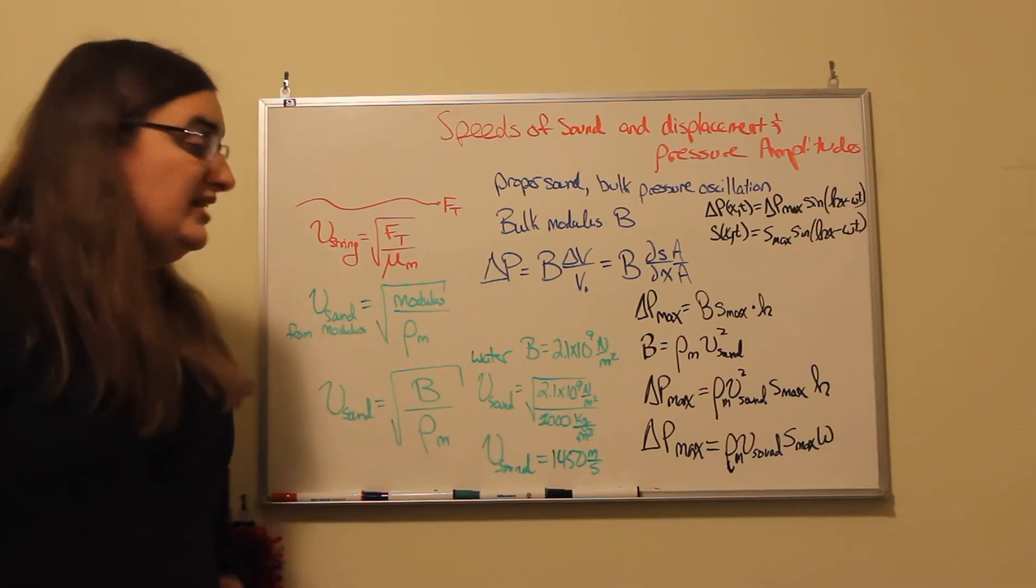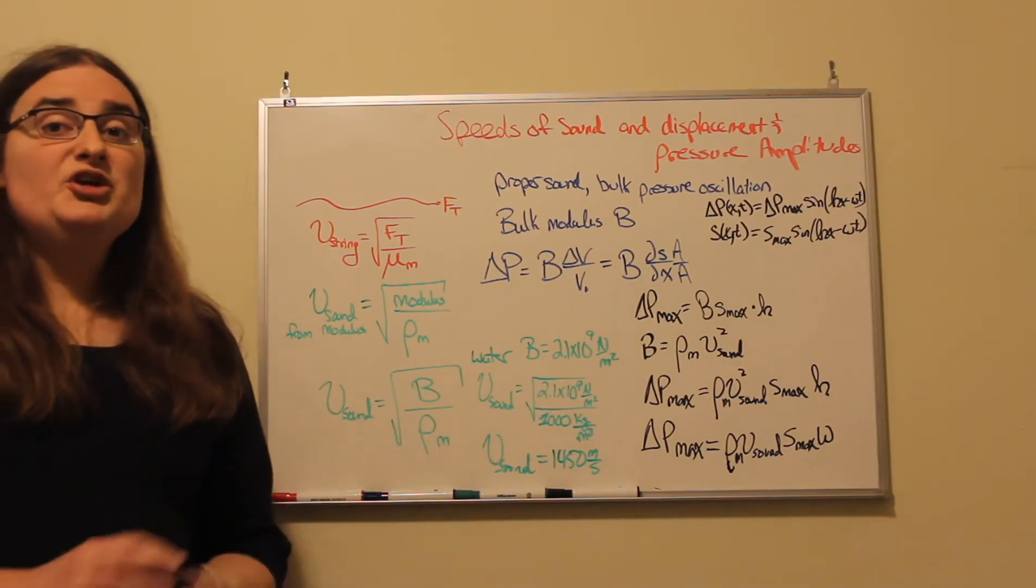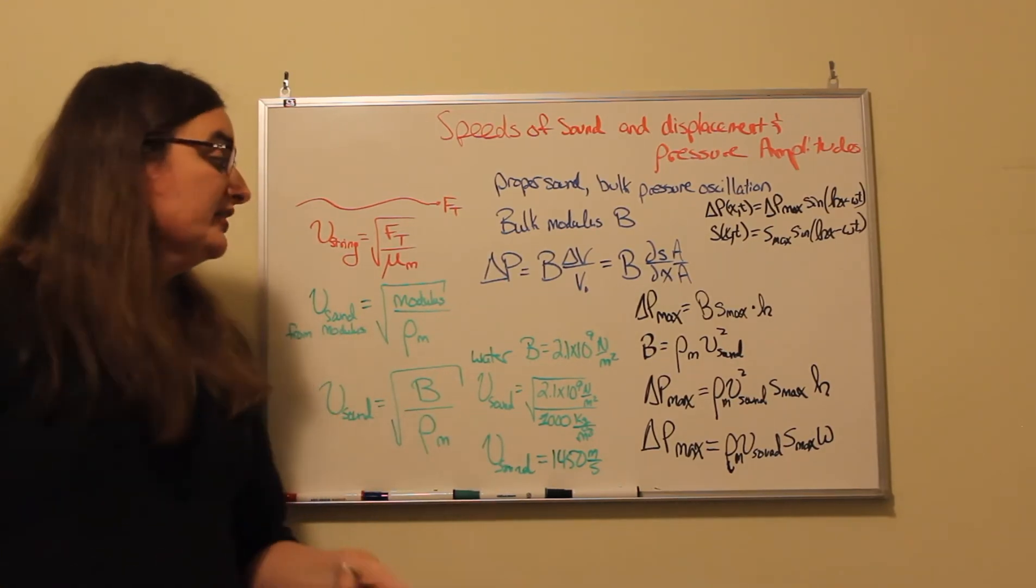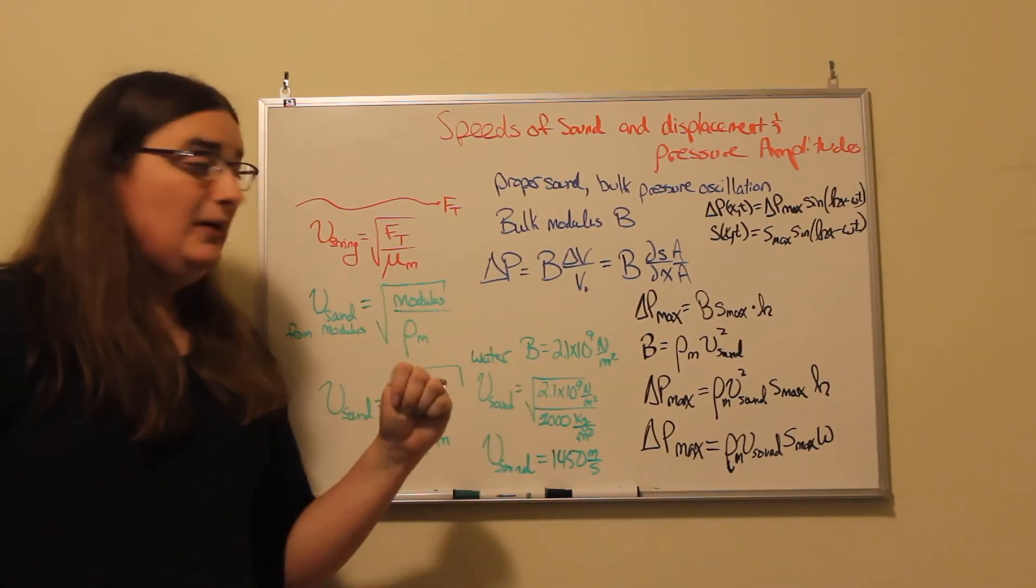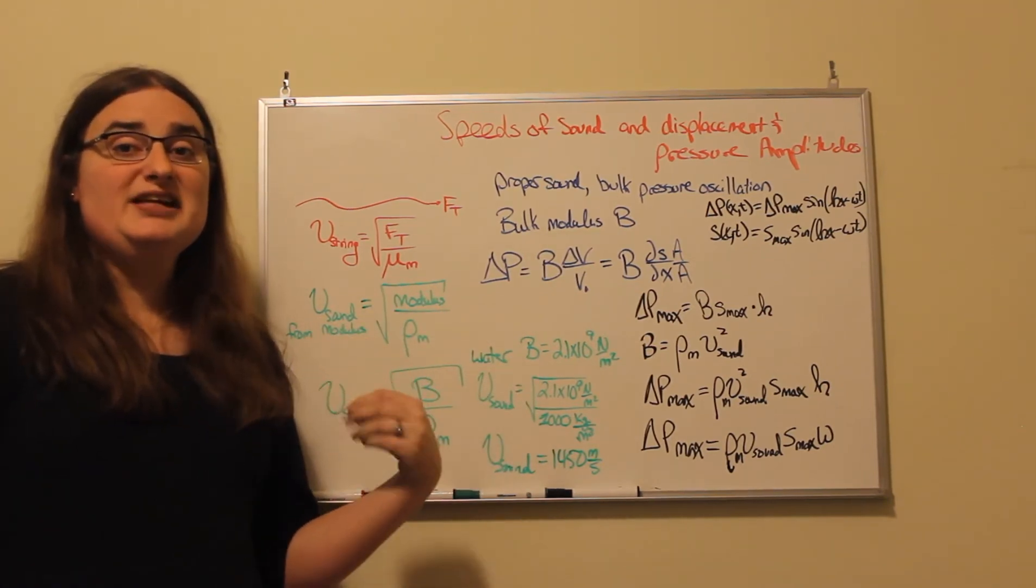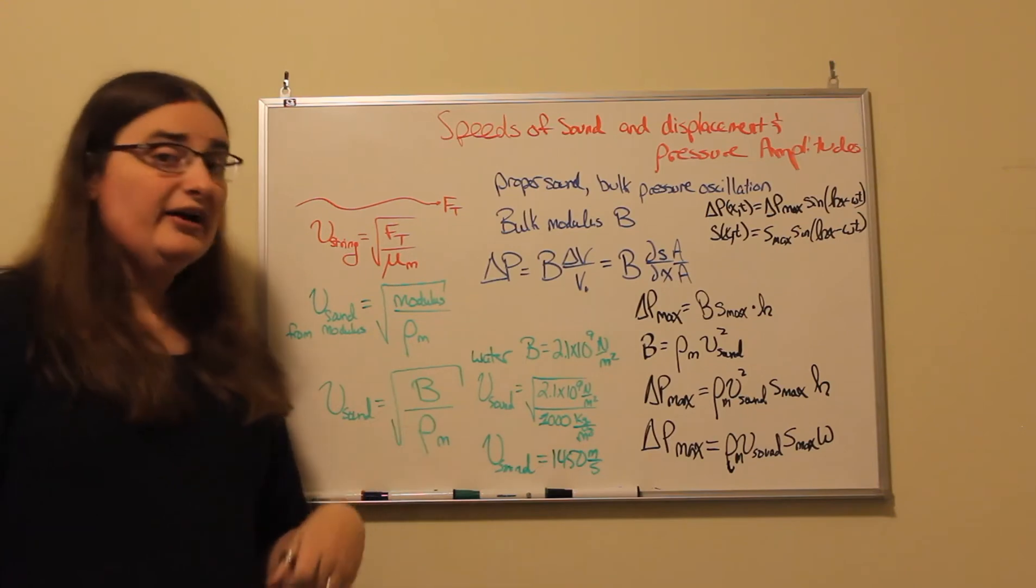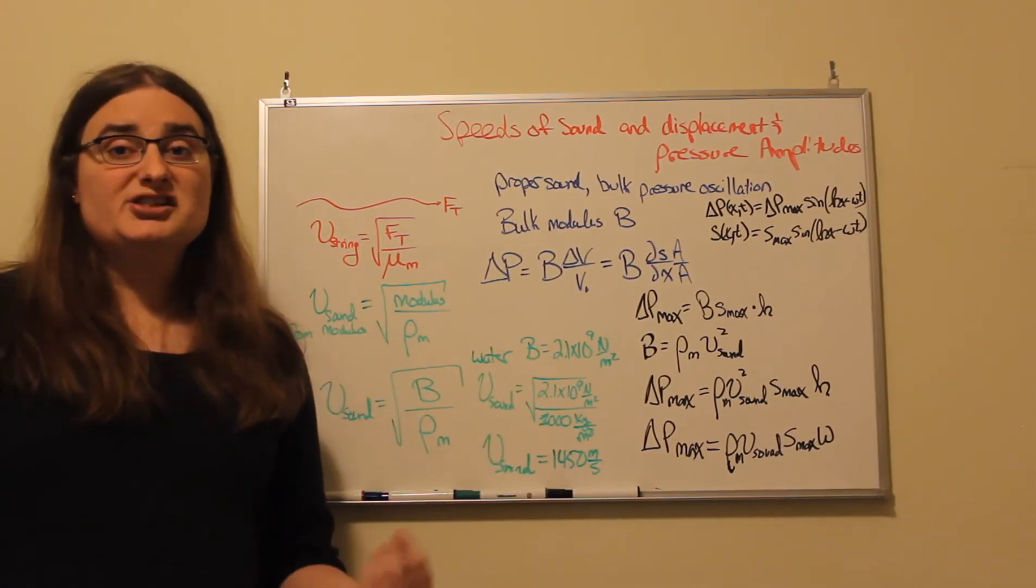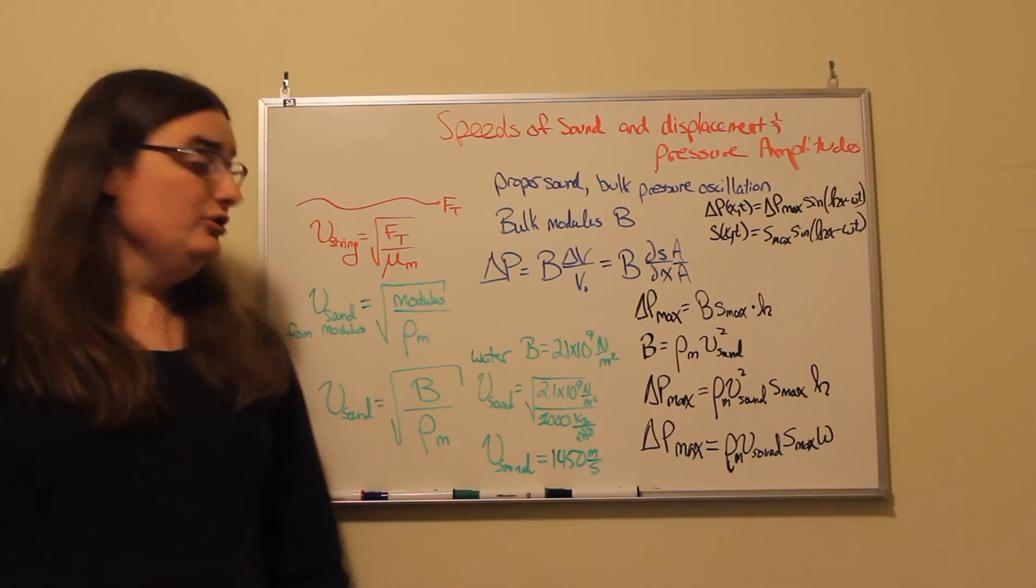So we could take a look at water and figure out the speed of sound underwater. For water, the bulk modulus is 2.1 times 10 to the 9 newtons per meter squared. The density of water is right around 1000 kilograms per meter cubed.